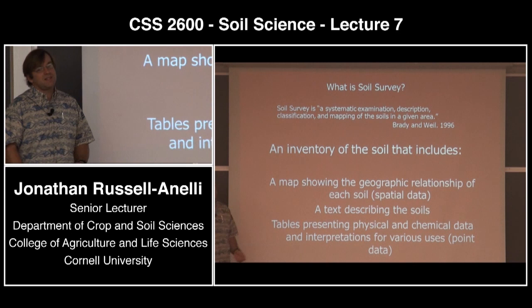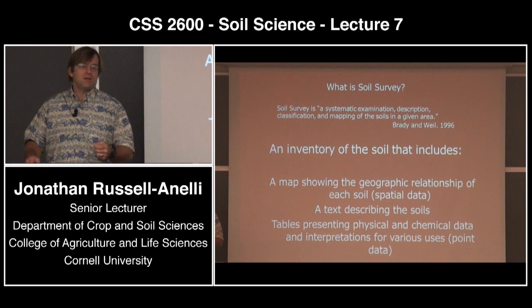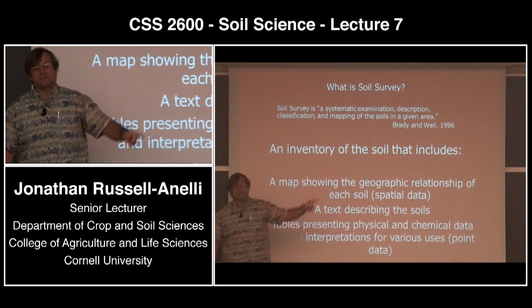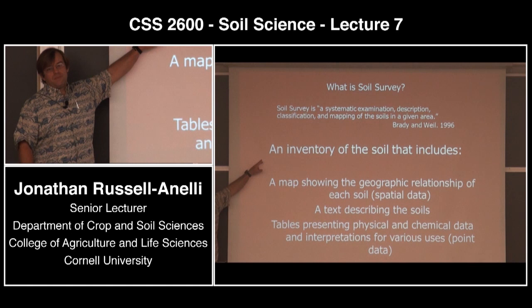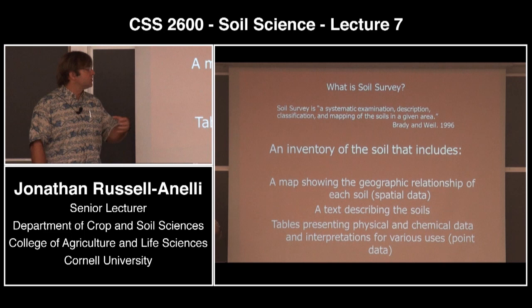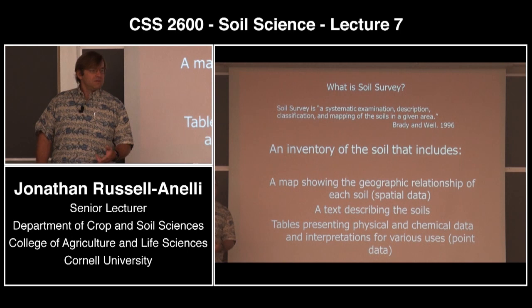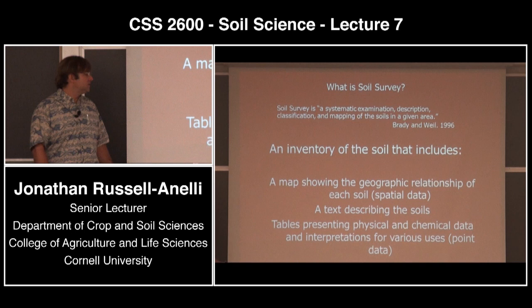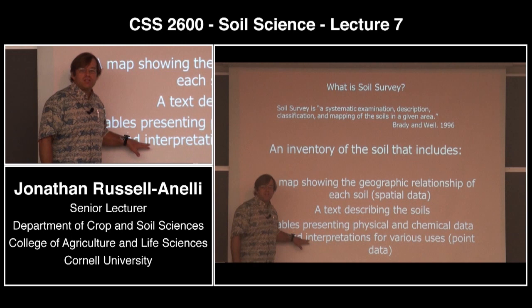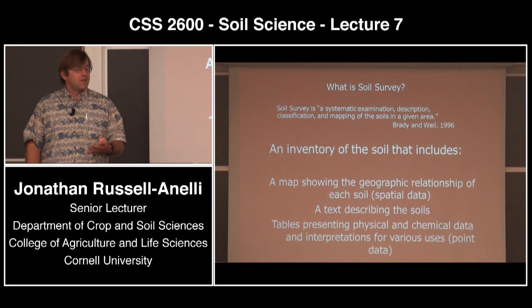So what is a soil survey? It's basically a systematic examination, description, classification, and mapping of soils in any given area. It's an inventory of soils, and in that inventory are basically four things: a map showing the geographic relationships of each soil and where they are positioned in space; a text describing those soils; a table of physical and chemical data for those soils; and finally an interpretation for the various uses. Those are the four big things in soil survey.